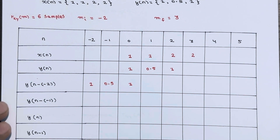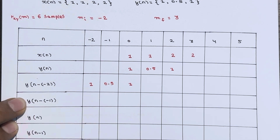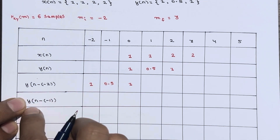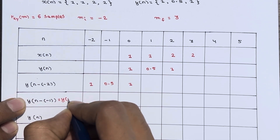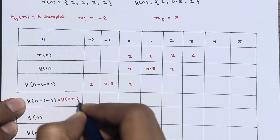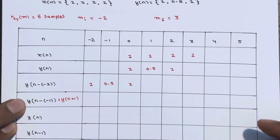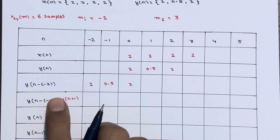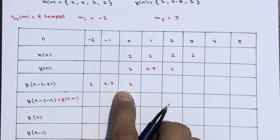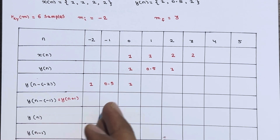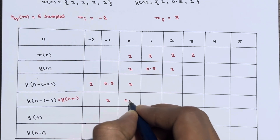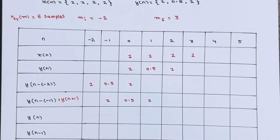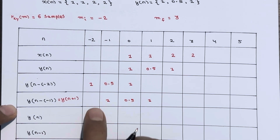When m equals minus one, we get y(n - (-1)) = y(n + 1). y(n+1) is a one-unit right shift compared to y(n+2). So one, zero point five, and one — starting one position to the right of the previous row.